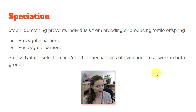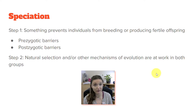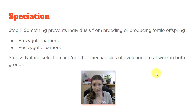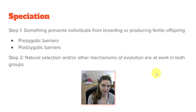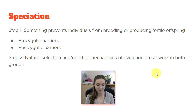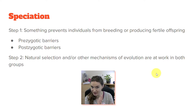Those barriers could be prezygotic barriers — anything that prevents a zygote from forming — such as behavioral or physical prezygotic barriers, or simply being in separate places. If you're not in the same place, you can't make a zygote. Or postzygotic barriers: anything that after the zygote has formed works against it by decreasing its success or making it infertile. Something has stopped these individuals from breeding.